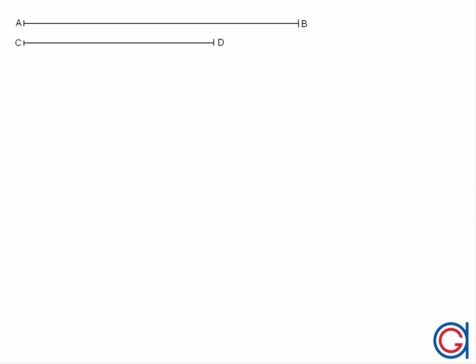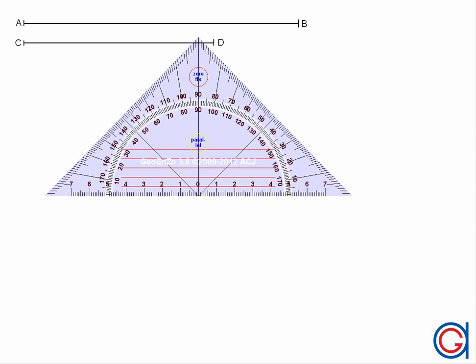Hello, today we are going to draw an oval given the length of its two axes, which can be seen at the top left-hand side of our screen: line segments AB and CD.